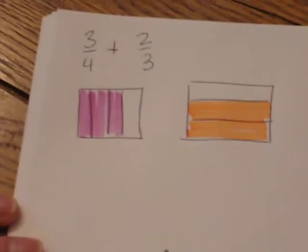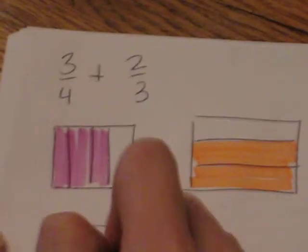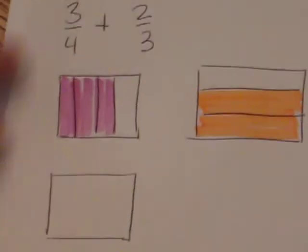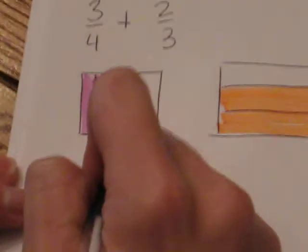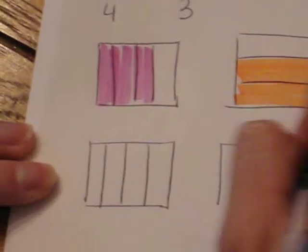Right now I've shaded 3 fourths and 2 thirds. We can't really add these fractions because we're talking about different sized pieces. So in order to add these fractions, we have to make them the same size so we can combine them.